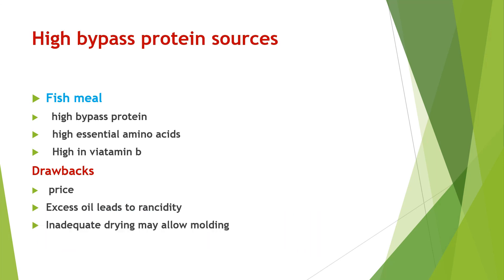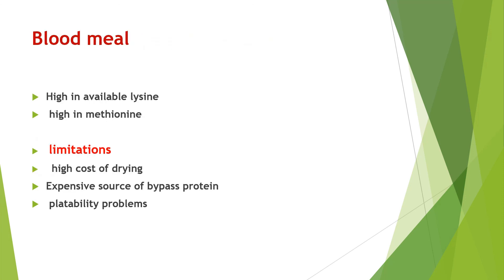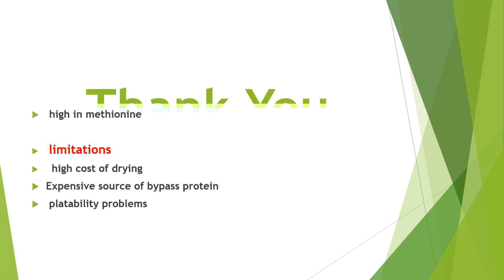High bypass protein sources include Fish Meal, which has high bypass protein, high essential amino acids, and is high in vitamin B. Drawbacks include high prices, excess oil leading to rancidity, and inadequate drying may allow molding. Blood Meal is high in available lysine and methionine. Limitations include high cost of drying and being an expensive source of bypass protein. Thank you.